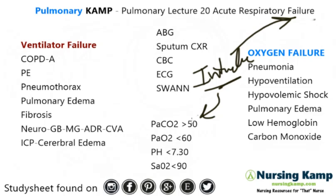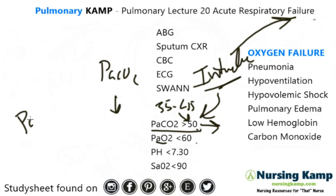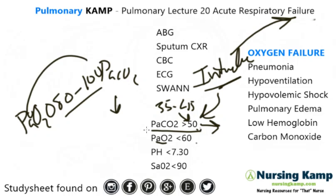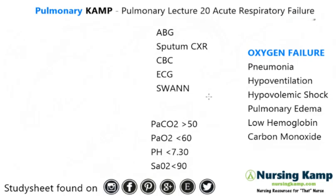A PaCO2 of greater than 50 — normal PaCO2 is 35 to 45, and if there's too much acid the patient is hypercapnic and needs to be intubated to blow off CO2. A PaO2 of less than 60 — normal PaO2 is 80 to 100; if the patient isn't oxygenating and it drops below 60, they need oxygenation due to oxygen failure. A pH below 7.35 is acidotic. And the SaO2: SpO2 is the pulse ox reading, while SaO2 is the same measurement obtained from an ABG — a truly accurate oxygenation reading. That's the difference between SaO2 and SpO2.